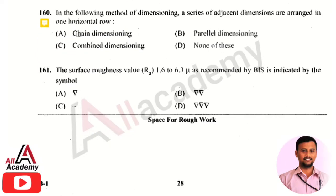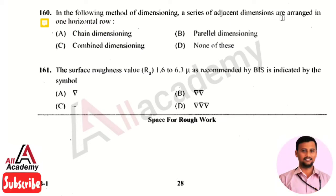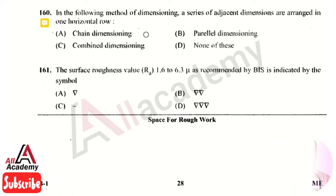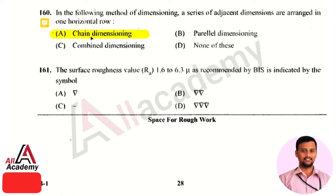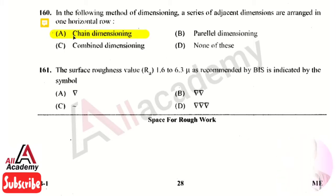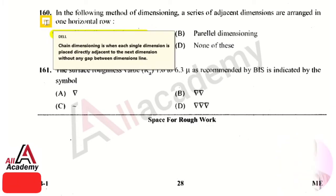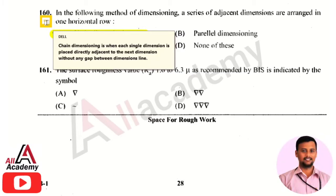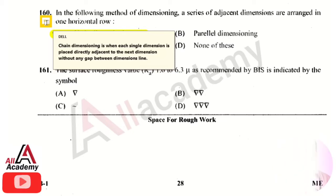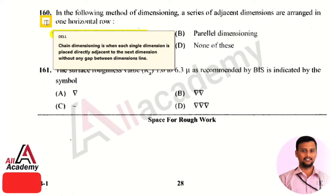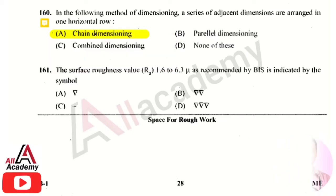The next question is: in the following dimensioning method, a series of adjacent dimensions are arranged in one horizontal row. The right answer is option 1, that is chain dimensioning. Chain dimensioning is used when each single dimension is placed directly adjacent to the next dimension without any gap between the dimension lines.